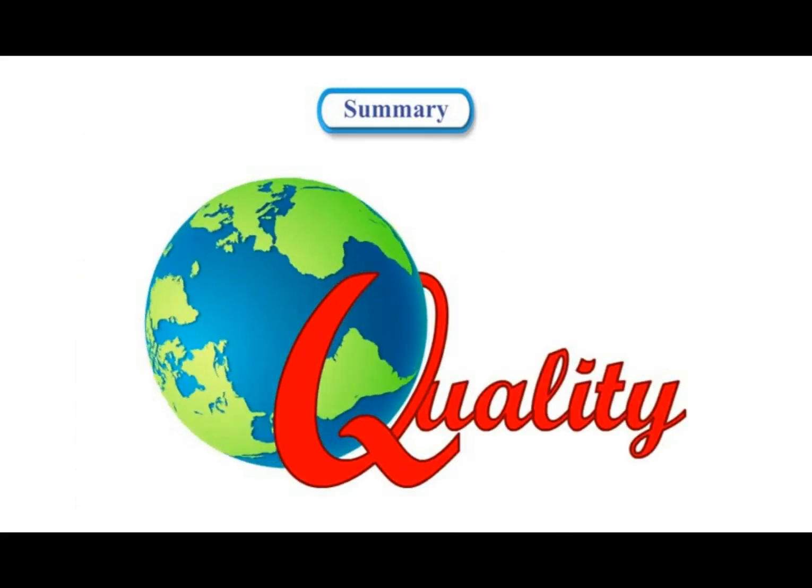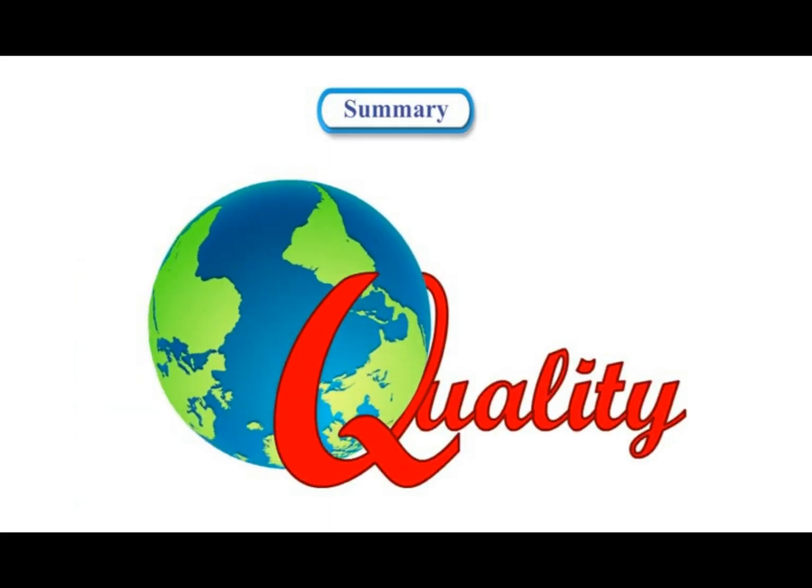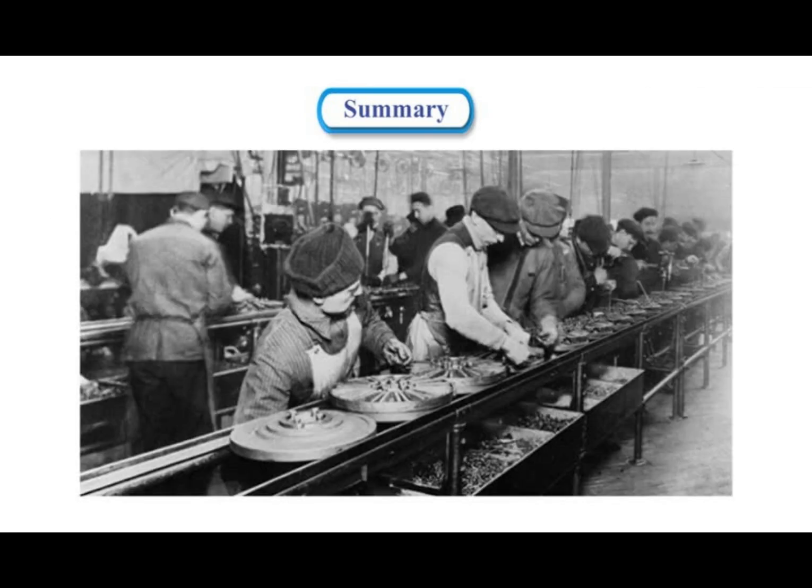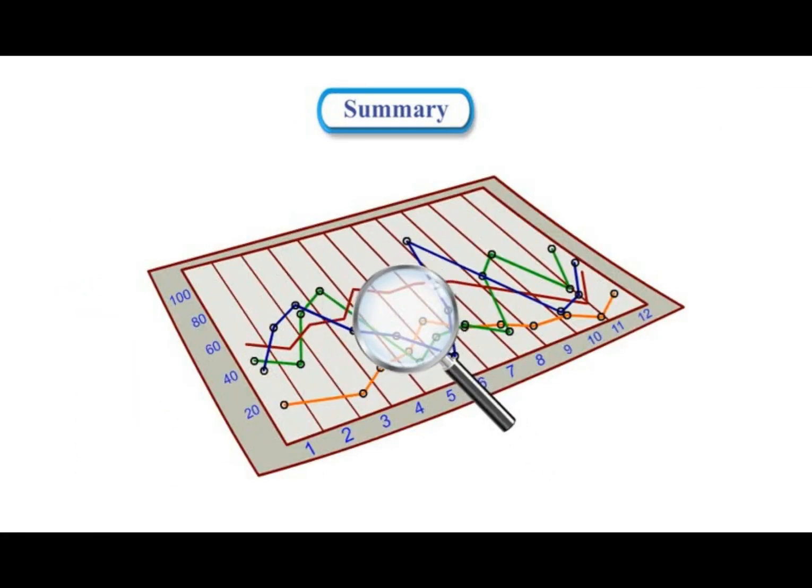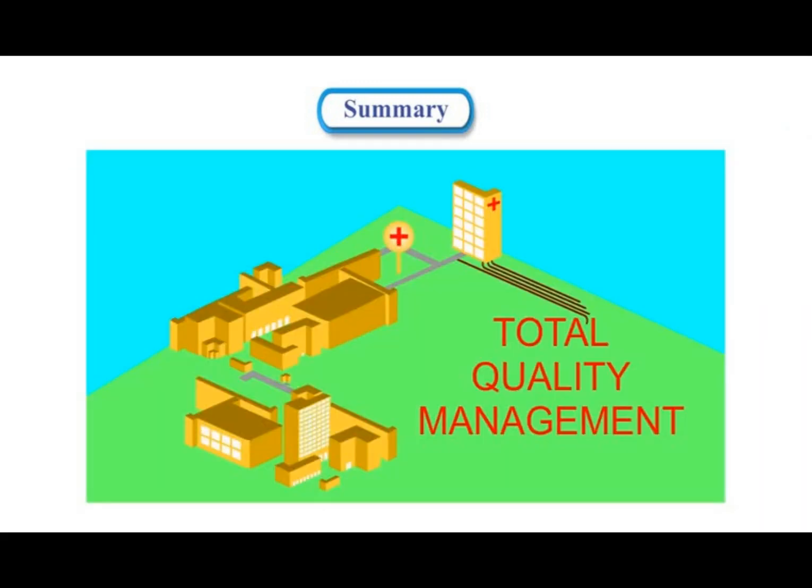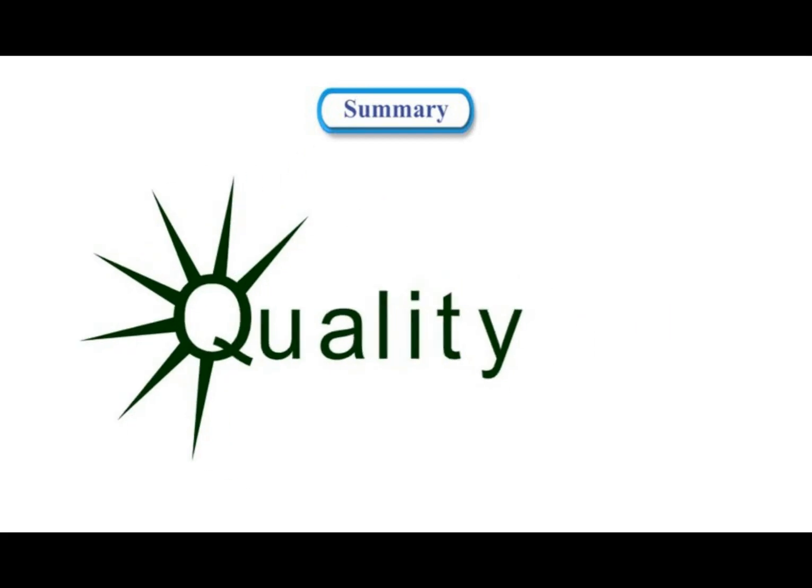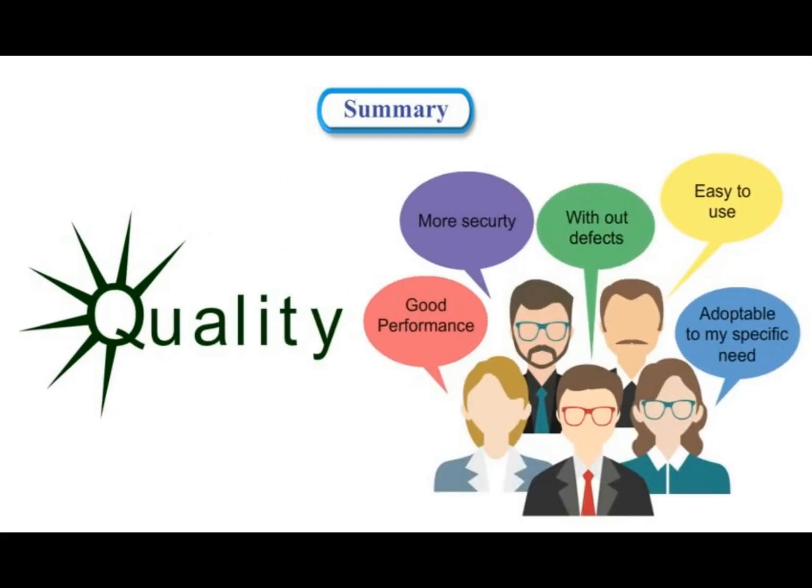Quality has various connotations and different meanings to different people. Quality has come a long way since its early steps from guilds, the factory system, scientific management, Taylorism, statistical quality control, total quality management, to the latest continual quality improvement. Similarly, the definition of quality has evolved over the ages. Unfortunately, there still is not a single consensus definition for the same.